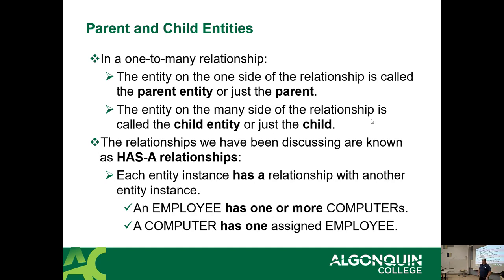You have many computers, but each of those computers belongs to you — you're the parent, the computers are your children. Going back to Loblaws: grab bananas, bread, peanut butter and get to checkout. Those three things belong to you. Your receipt is the parent, and each of the items in your bag are the children of the receipt.